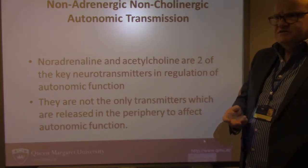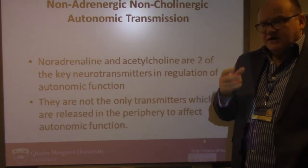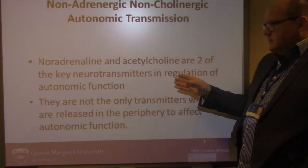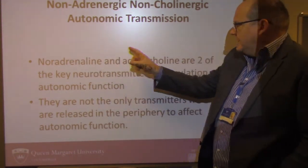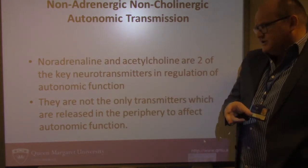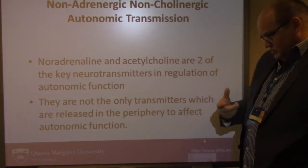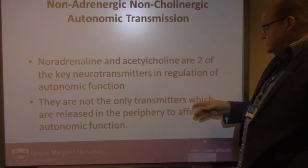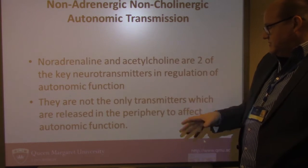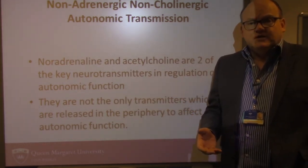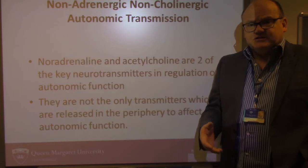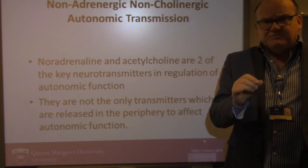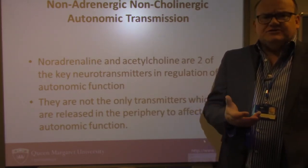These are referred to as the NANC, or just the NANC nerves. Obviously noradrenaline and acetylcholine — sympathetic and parasympathetic — are two of the key neurotransmitters within the body controlling autonomic function. But they're not the only neurotransmitters that are released into the periphery to have an effect on autonomic function. There are other neurotransmitter systems involved, and this PowerPoint today is just a very brief overview of those — a general introduction.